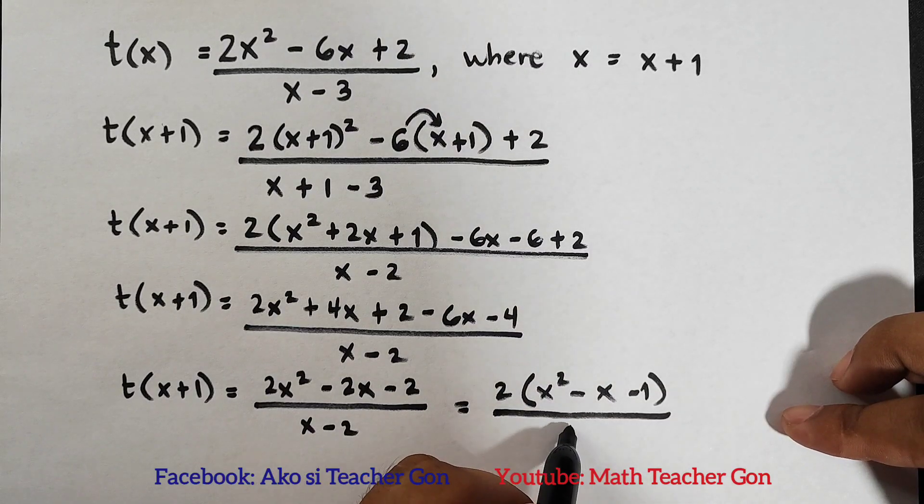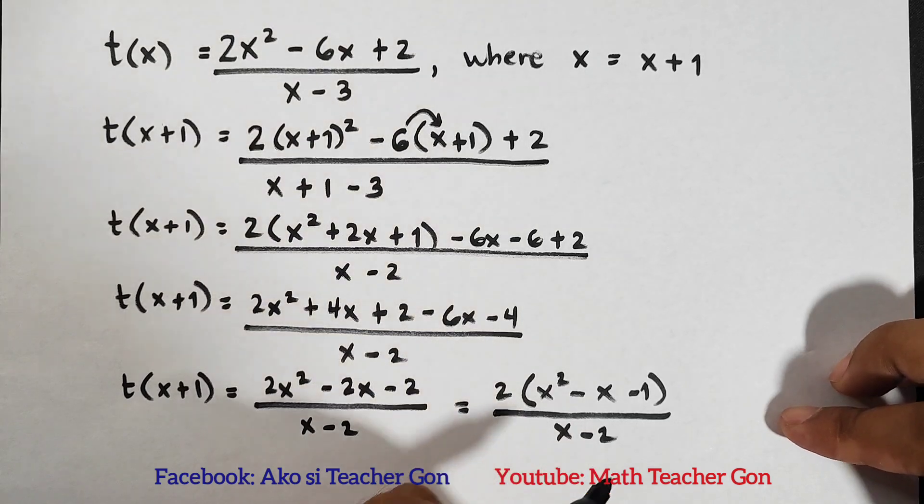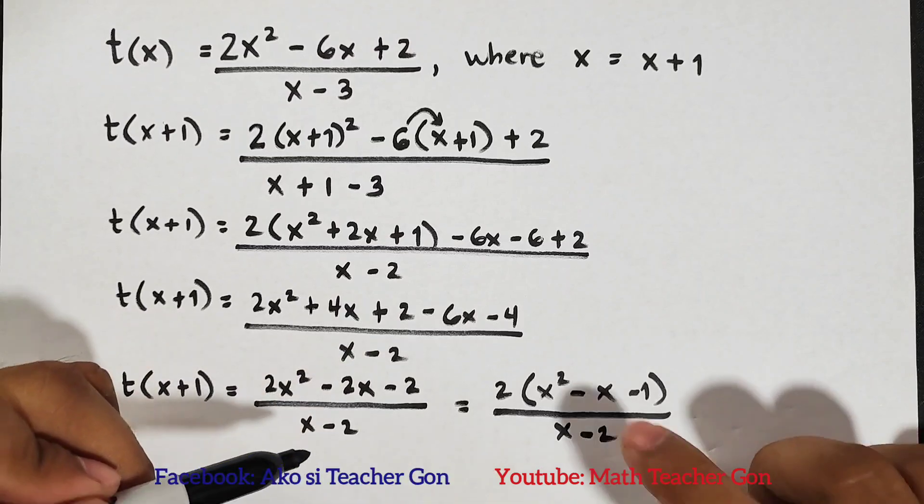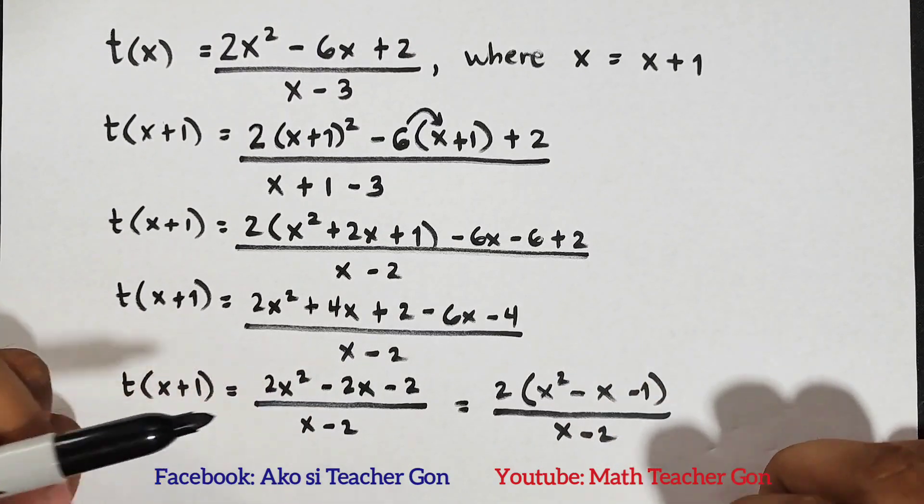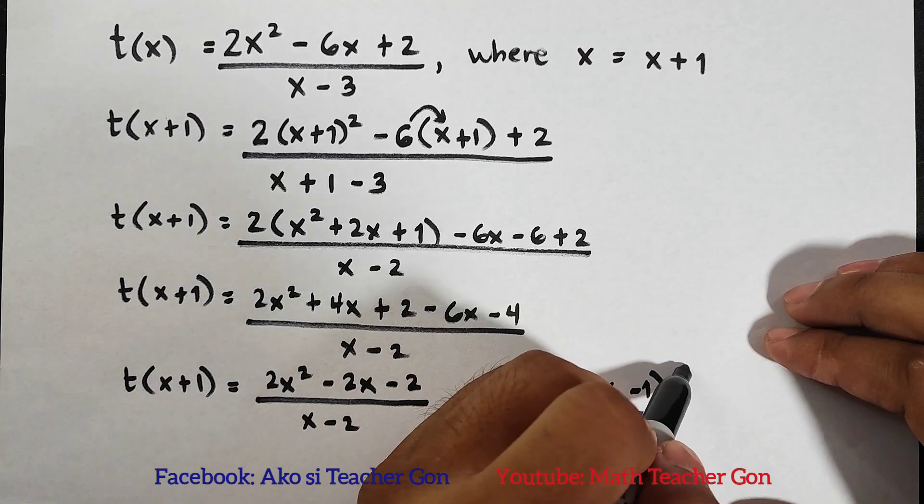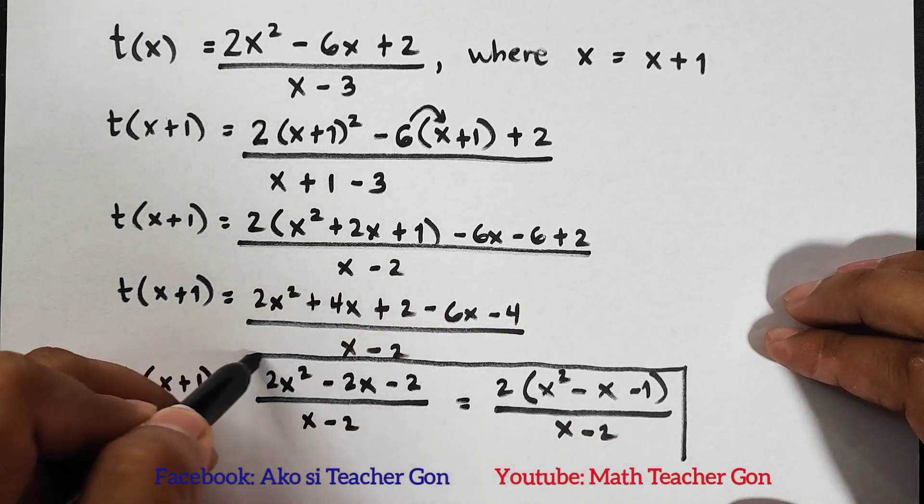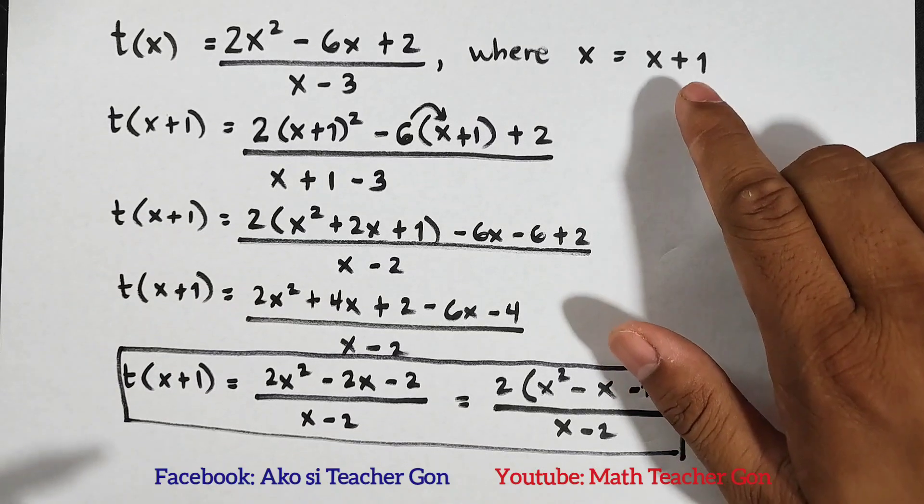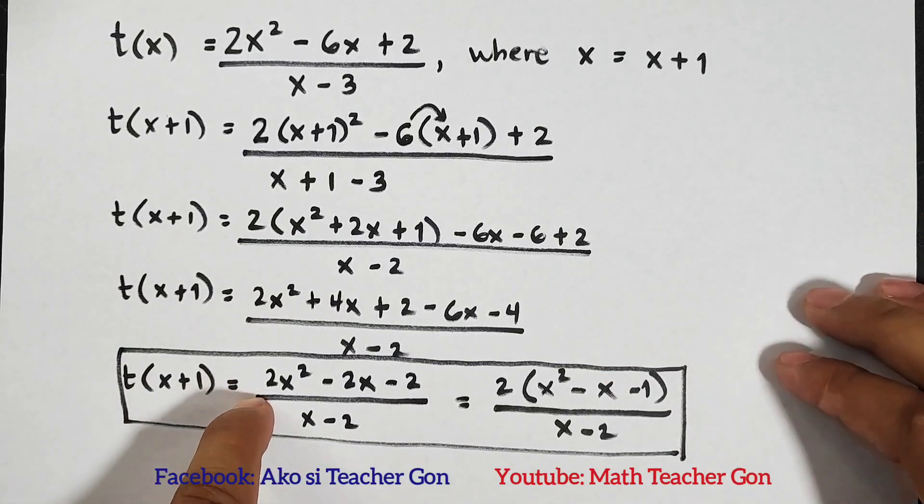After factoring out the numerator, it becomes like this. We don't have anything we can cancel out, so we can declare that the answer, or the possible answer for the function t when evaluated by x is equal to x plus 1, we have the answer of 2x squared minus 2x minus 2 over x minus 2, or this one.